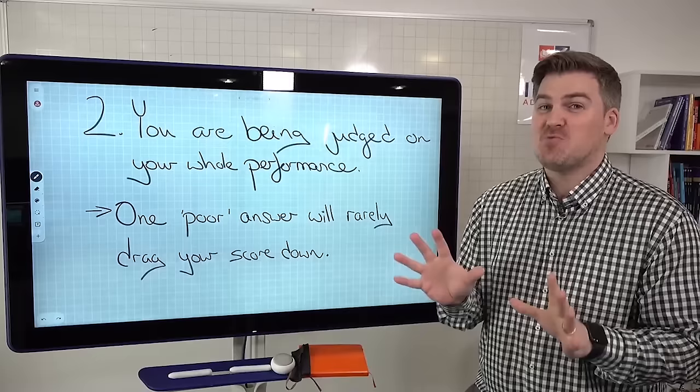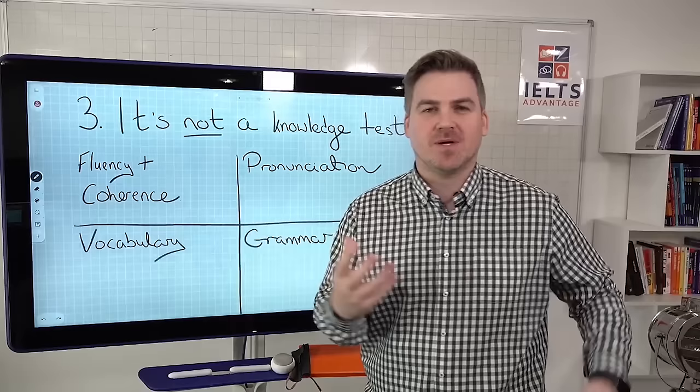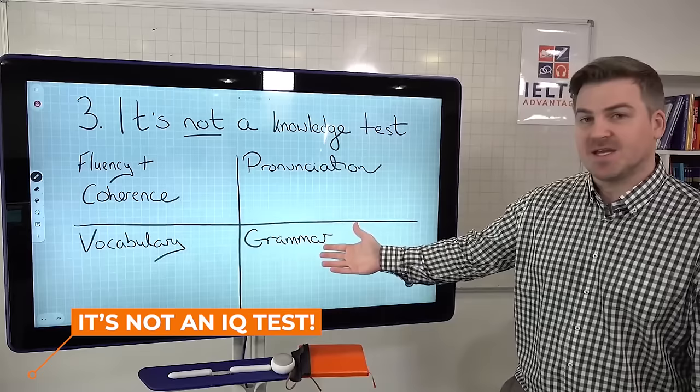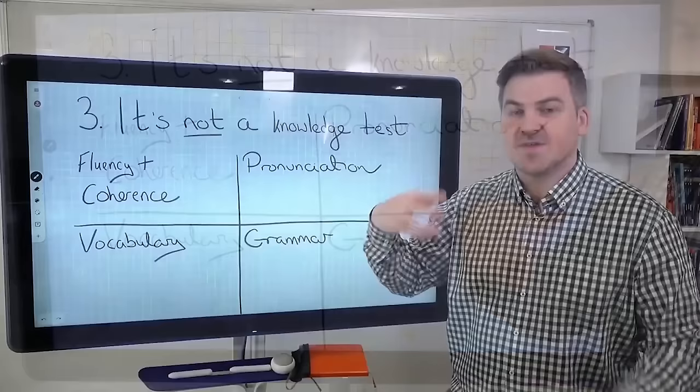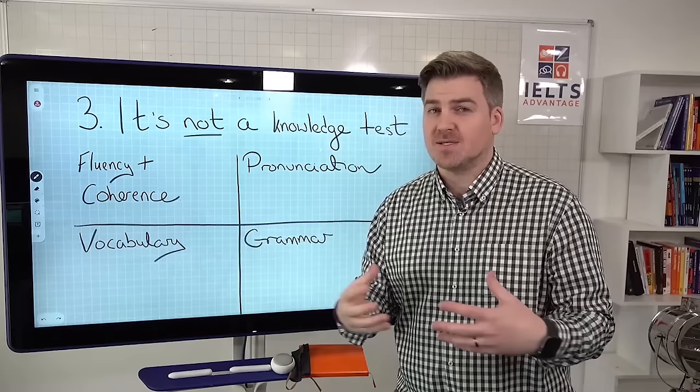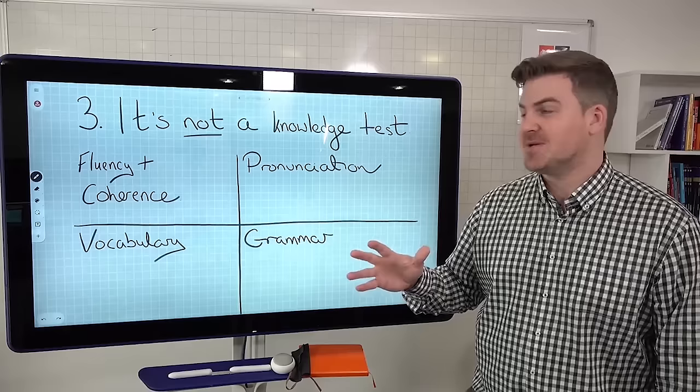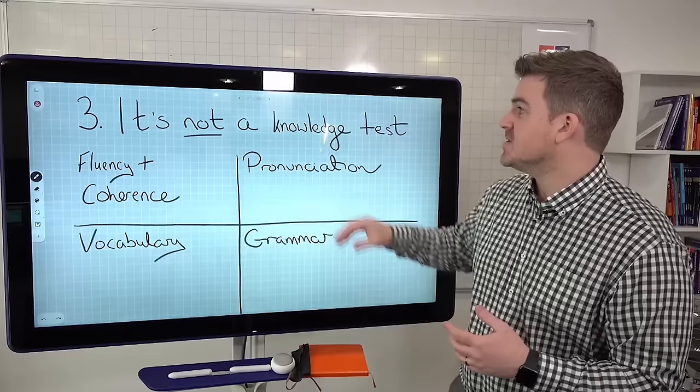Number three, it's not a knowledge test. A lot of you talk about what if I don't know anything about this topic or that topic. It's not a topic test, it's not a knowledge test, it's not an IQ test. It's a speaking test. What are the examiners thinking about? They're thinking about your grammar, vocabulary, pronunciation, and your fluency and coherence. Nothing that they're going to give you a score on is related to knowledge or topics or content. The strategies that I'll give you now allow you, even if you know nothing about that topic, to be fluent and demonstrate good pronunciation, grammar, and vocabulary. You don't need to worry about this as much as you think.